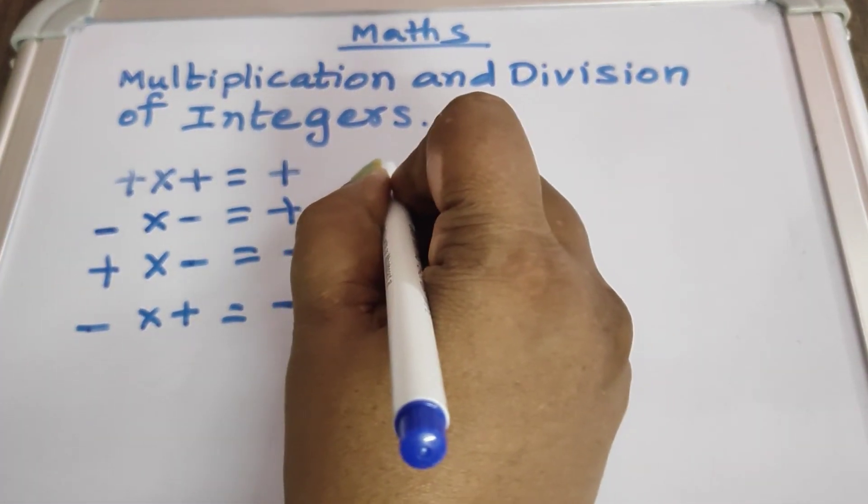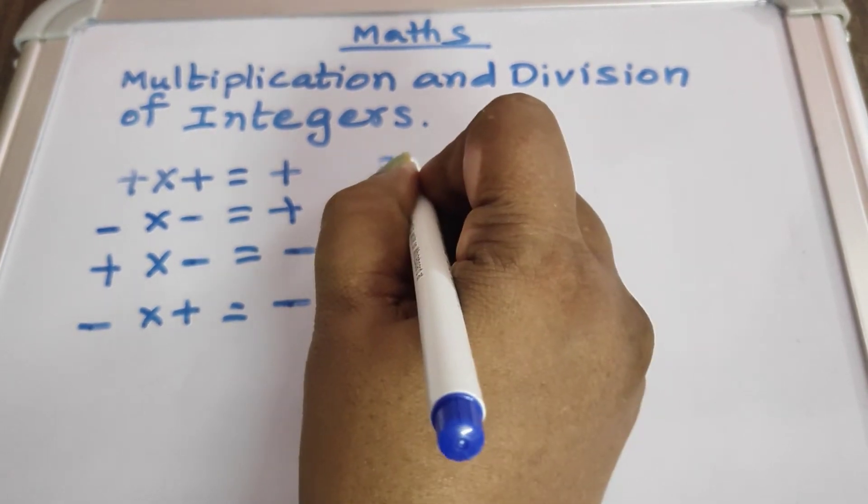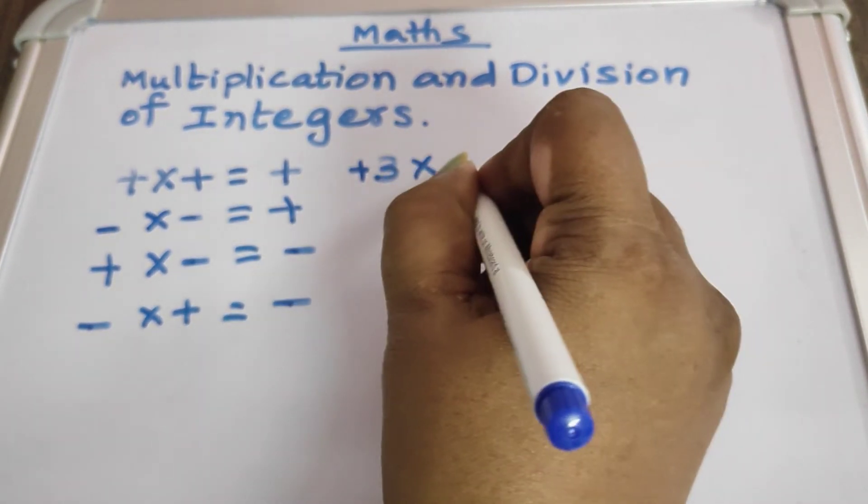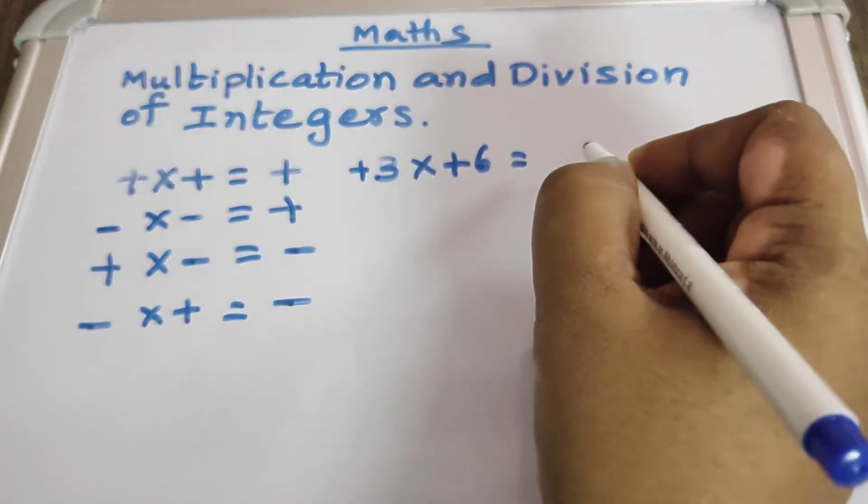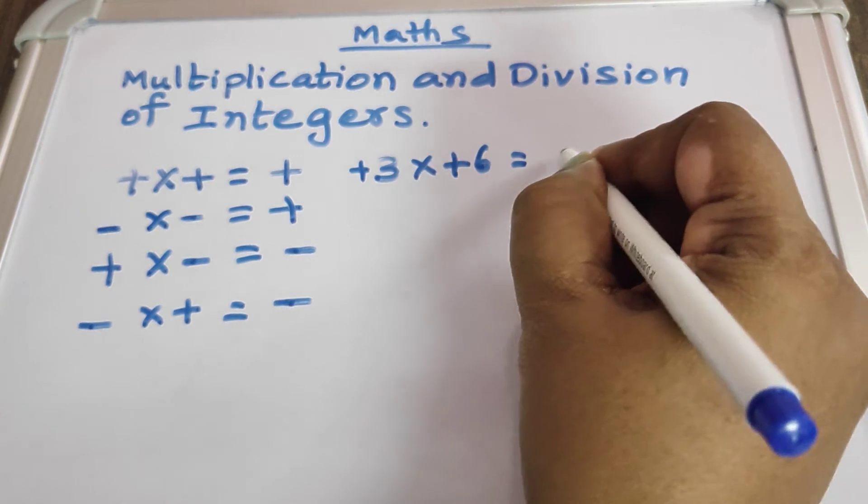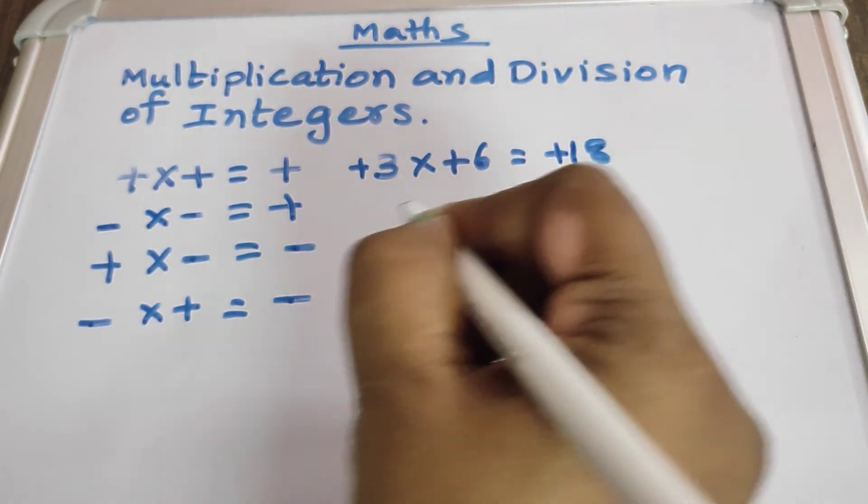Let's see, plus 3 into plus 6. 3 6's are 18 and the sign will come plus.